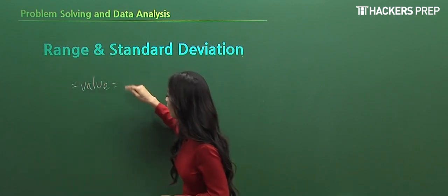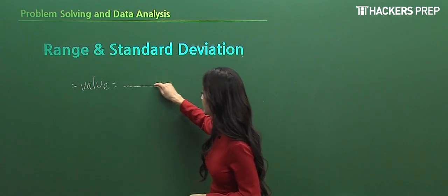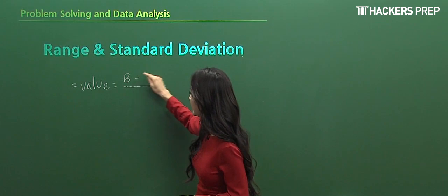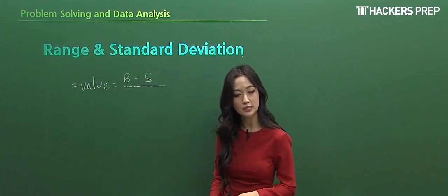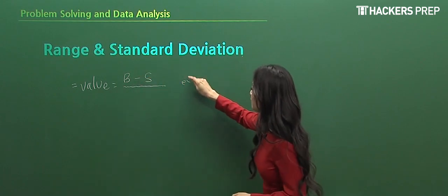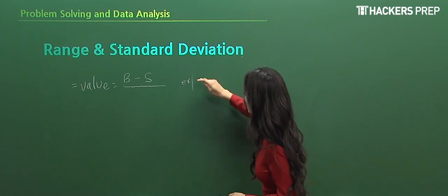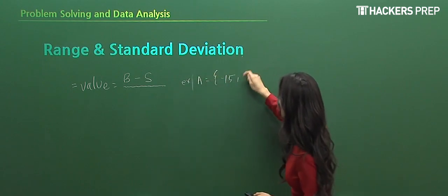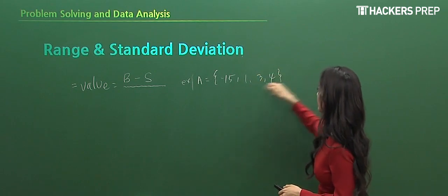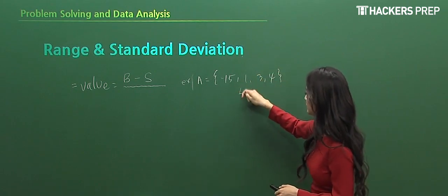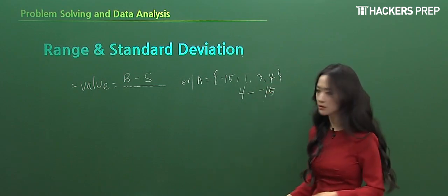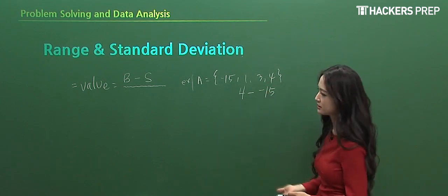All you have to do is look at the set of numbers and take the largest value, the biggest number, and subtract it by the least smallest number. For example, if I had a set comprised of numbers negative 15, 1, 3, and 4, the range in this particular example was take the greatest number and subtract it by the smallest, so the range would have a single value of 19 in this case.